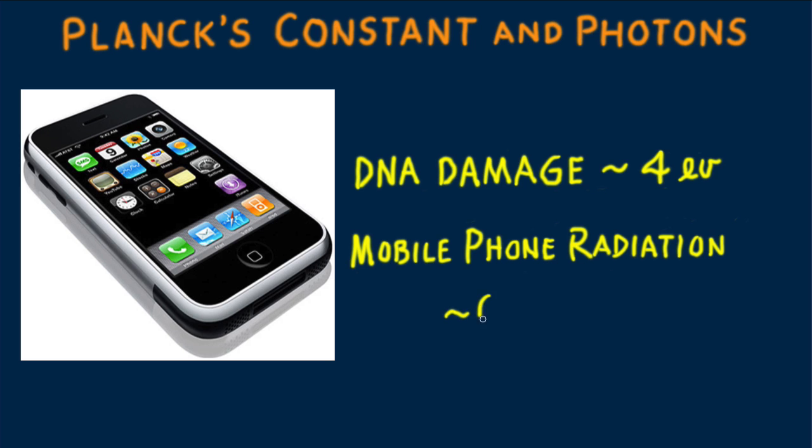The photons that make up mobile phone radiation are only some four millionths of an electron volt per photon. The minimum energy to damage DNA is at least four electron volts per photon.